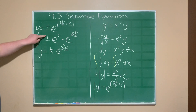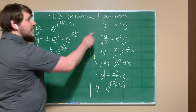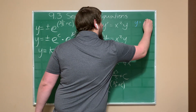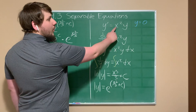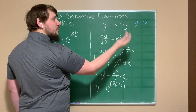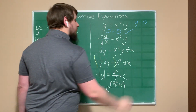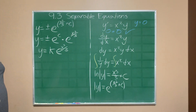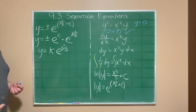Here k could be positive or negative — and in fact k could even be 0, because if y = 0 the differential equation is also satisfied: the derivative of 0 is 0, and 0 times anything is 0, making 0 = 0, which is true. So k can be any positive, negative, or zero value — k can be any real number — and the set of all solutions is all functions of the form k · e^(x³/3).